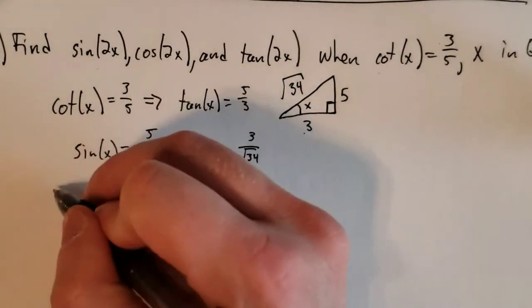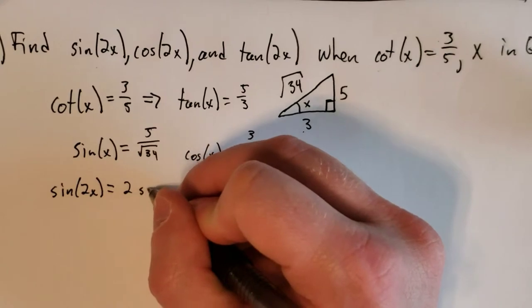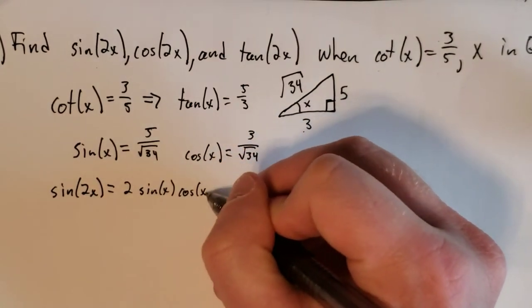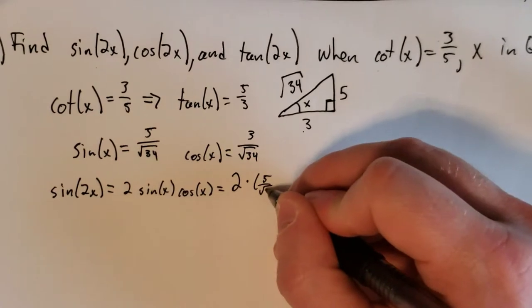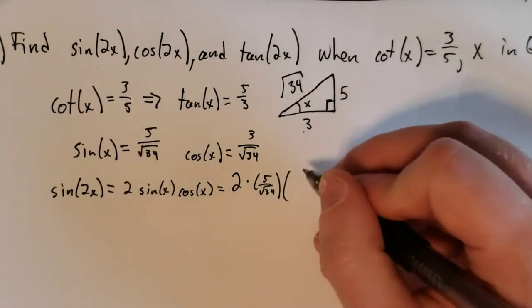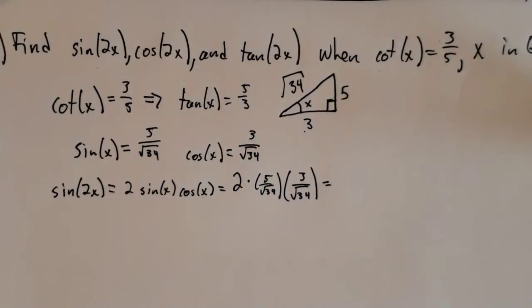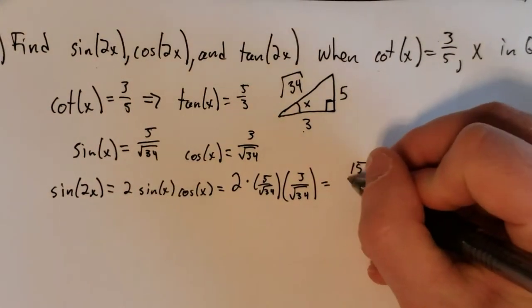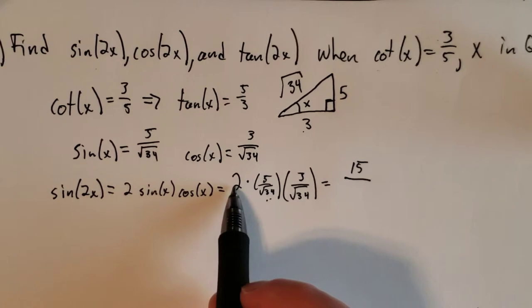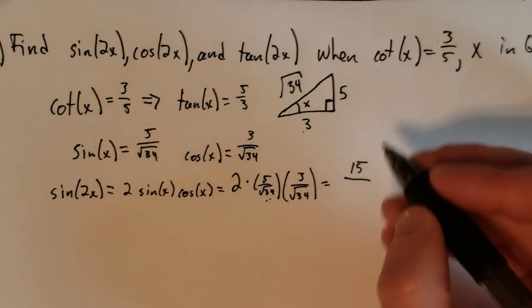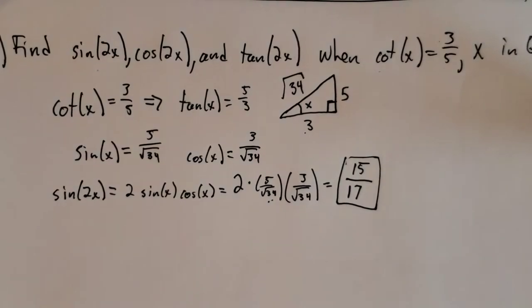And we need to find sine of 2x. We have a formula for that, so we're just going to write down the formula. And that formula is 2 sine of x cosine of x, which is 2 times sine of x, 5 over the square root of 34, times cosine of x, 3 over the square root of 34. So this is 5 times 3 is 15. Square root of 34 times square root of 34 is 34. But then we also have a multiply by 2 up there, and this 34 is in the denominator. So 2 over 34 reduces to 1 over 17. So we get 15 seventeenths for sine of 2x.